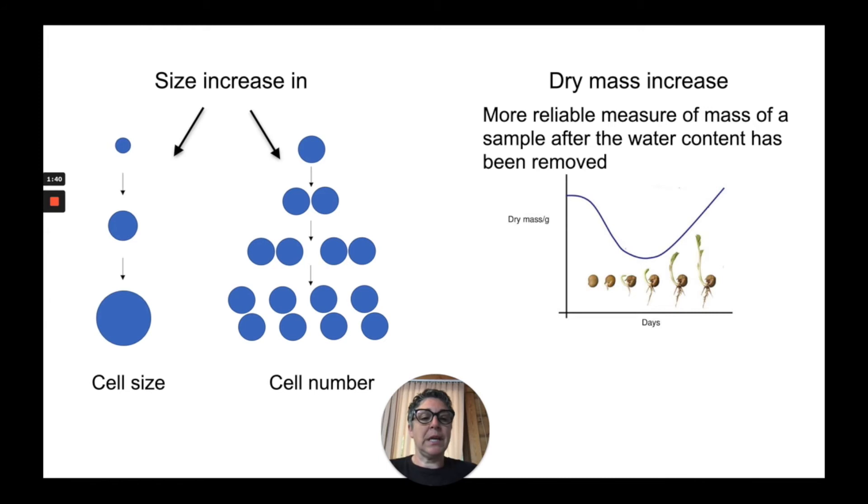For example, we're looking at a seed that is germinating over a particular period of time, and the dry mass in this instance would be measured in grams. As a seed begins to germinate and sprout the beginnings of a stem and root, we see the dry mass of that organism reduce as the fat storage starts to be used and broken down.